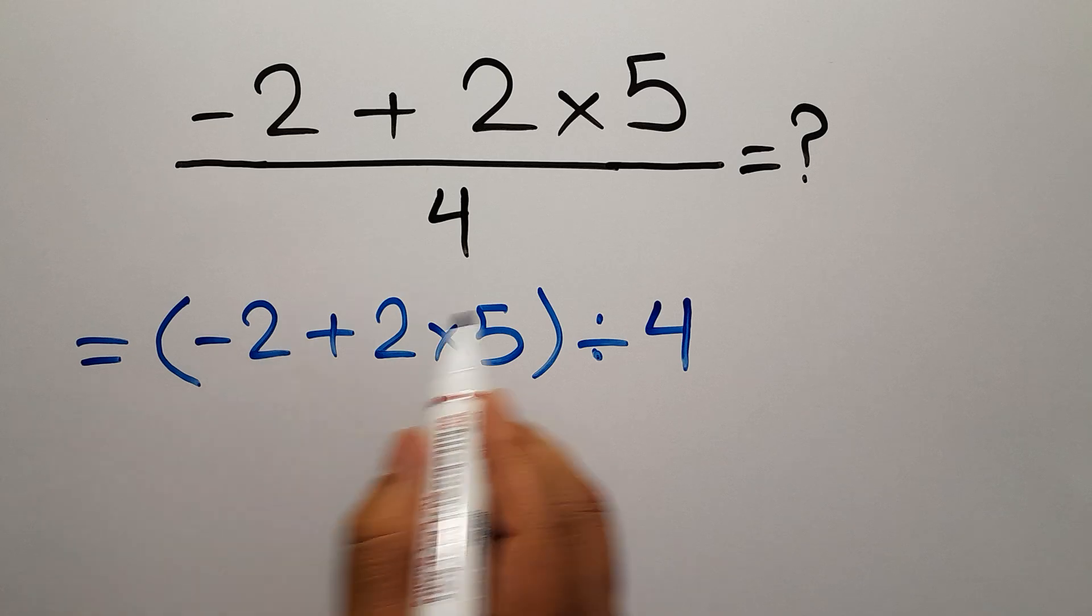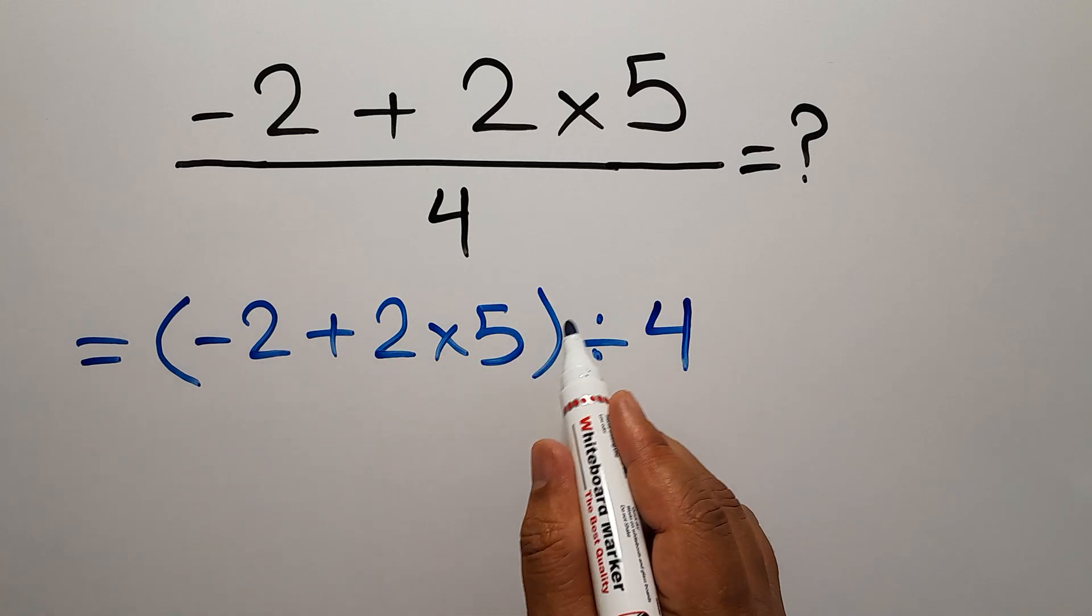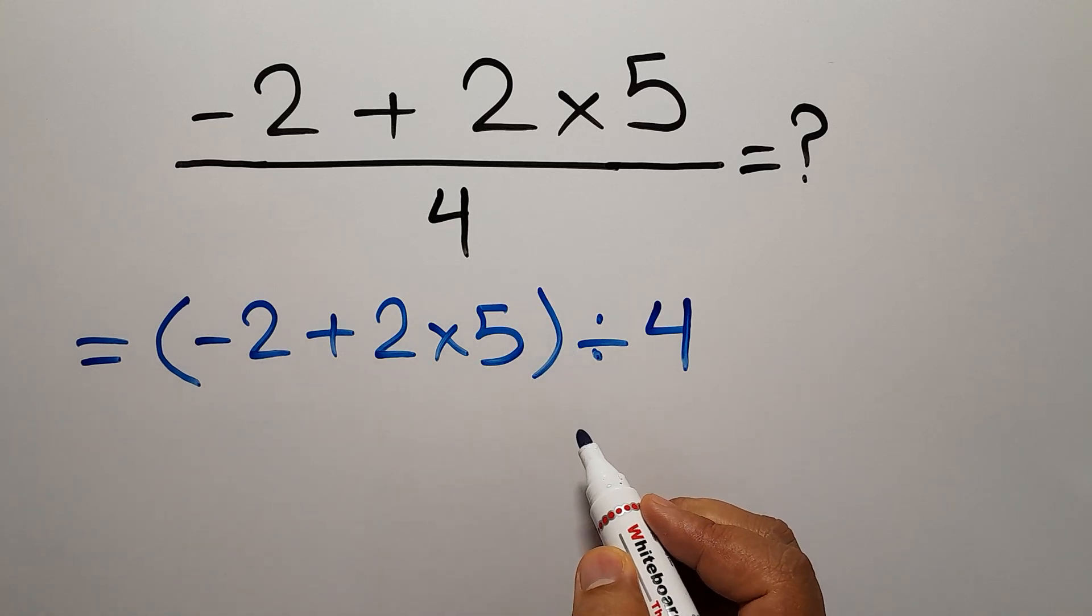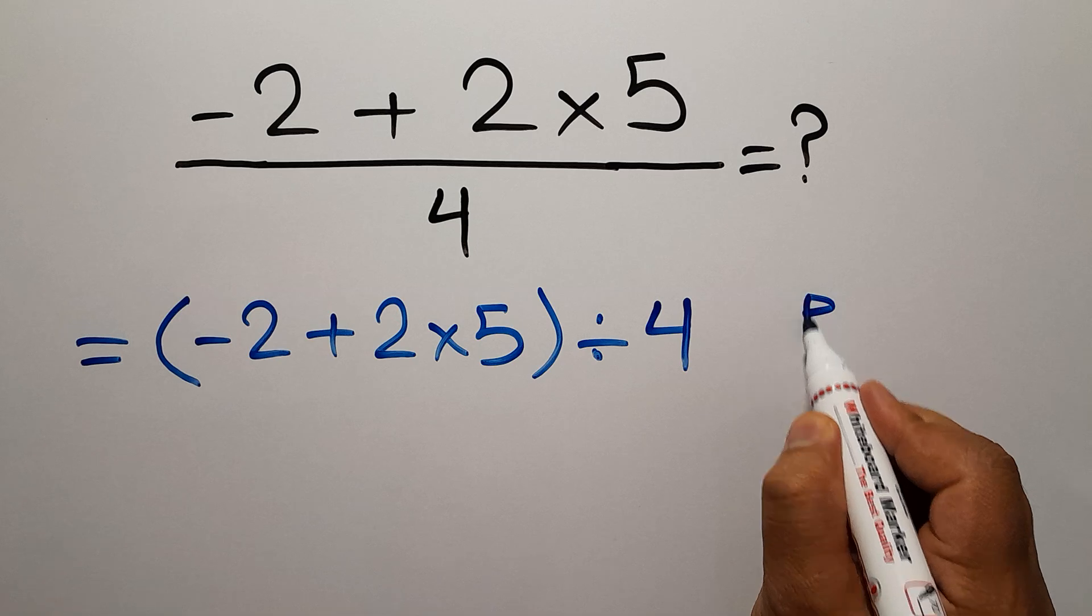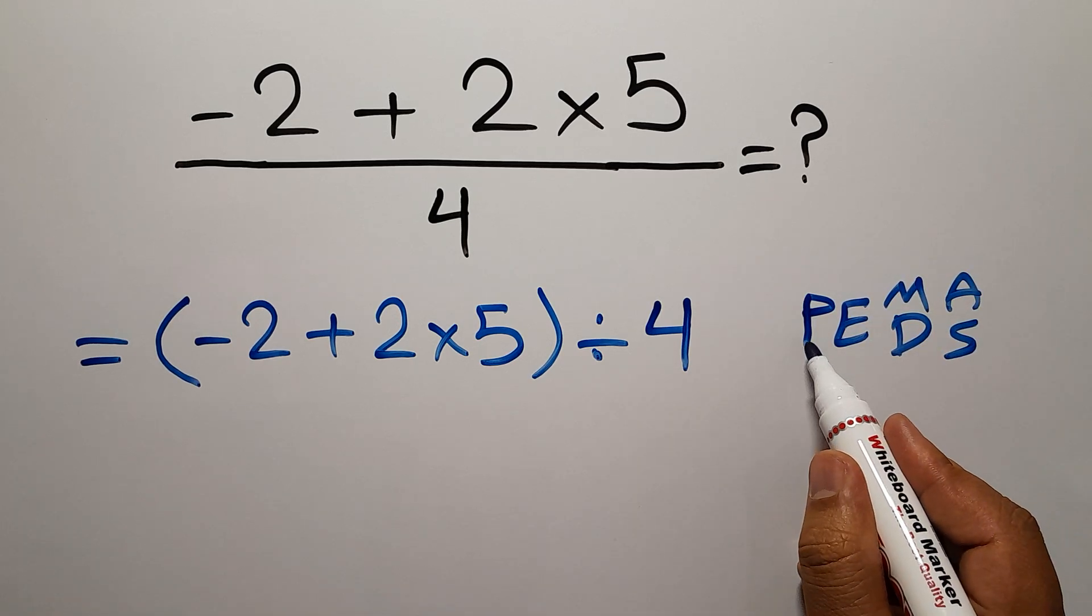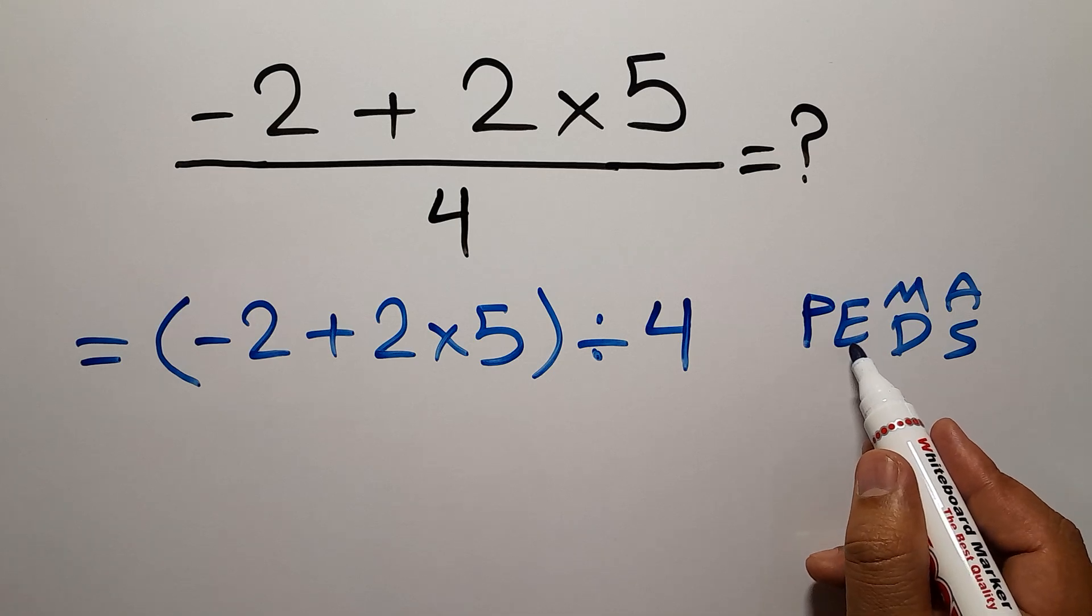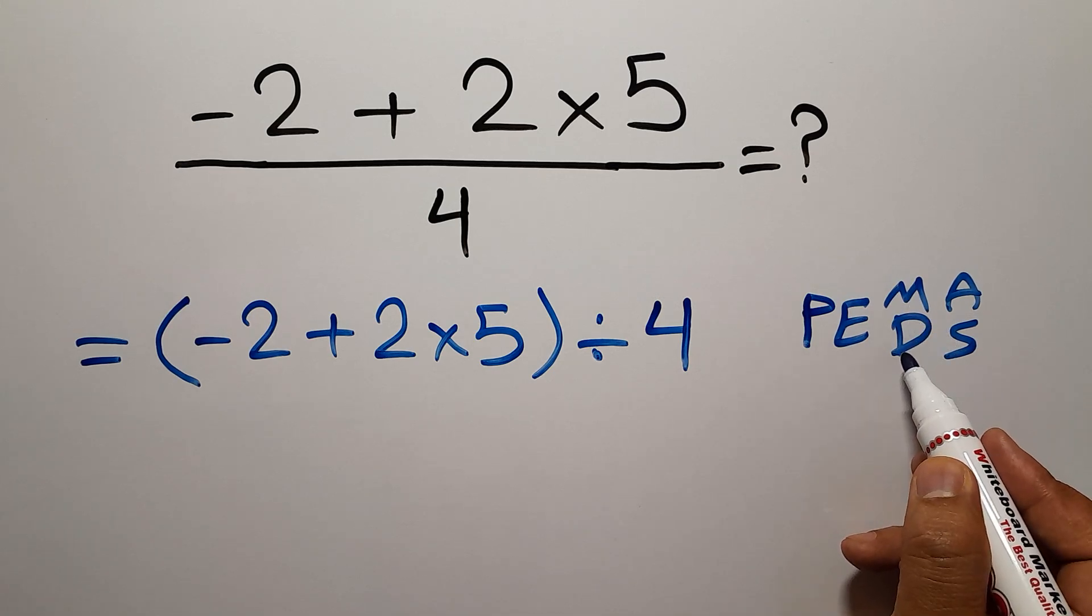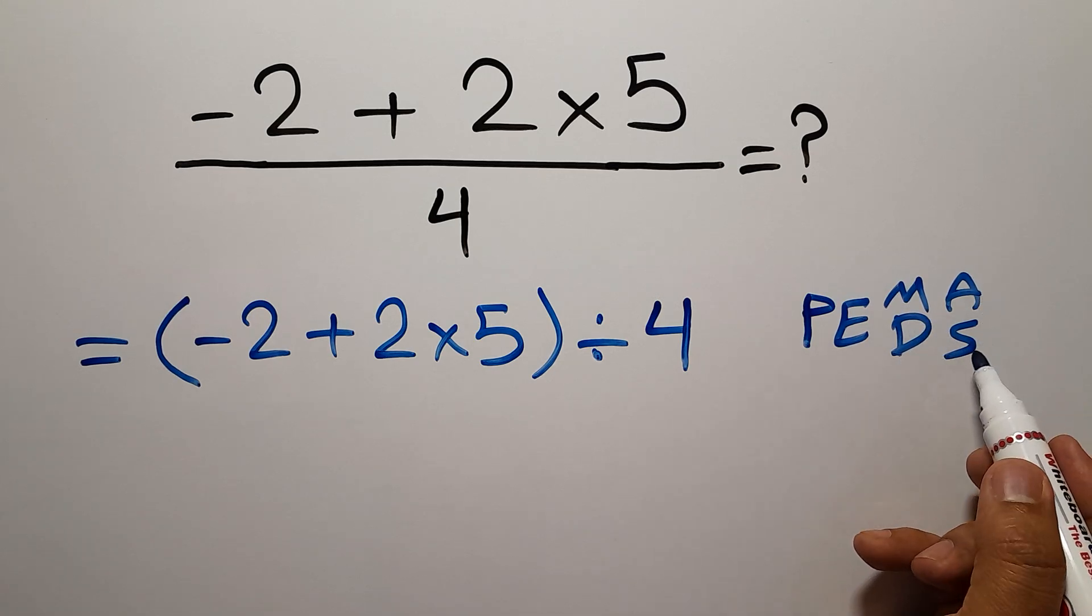Now we have one parentheses and one division. According to the order of operations, which is PEMDAS: P stands for parentheses, E stands for exponents, M and D stands for multiplication and division, and A and S stands for addition and subtraction.